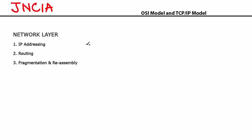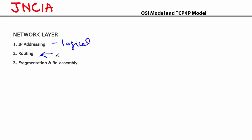Let's understand the network layer, which is the third layer of the OSI model. It has three important functions. Number one is IP addressing — IP addresses are logical addresses assigned to computers. Number two is routing — you need to be able to route packets between IP addresses, sending packets from one router to another until they reach the destination. The last important function is fragmentation and reassembly.